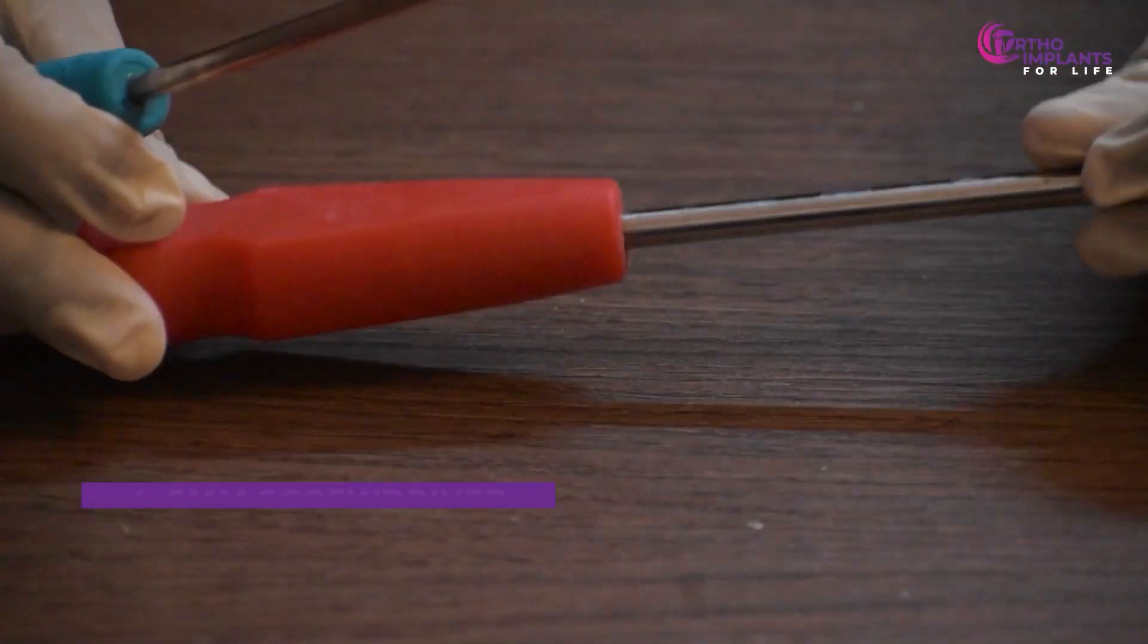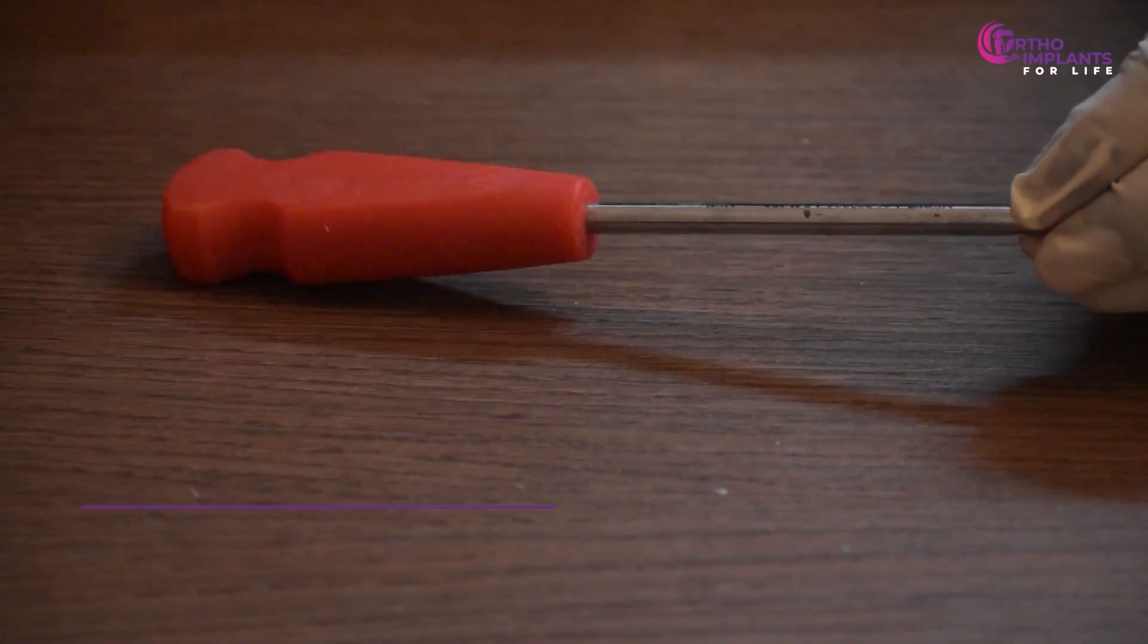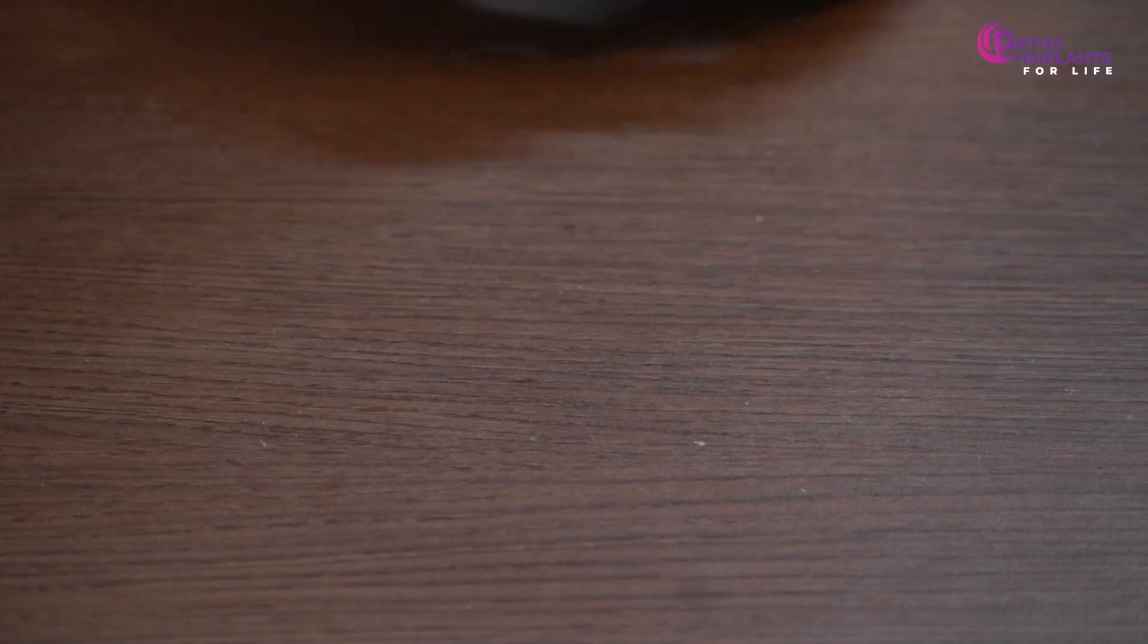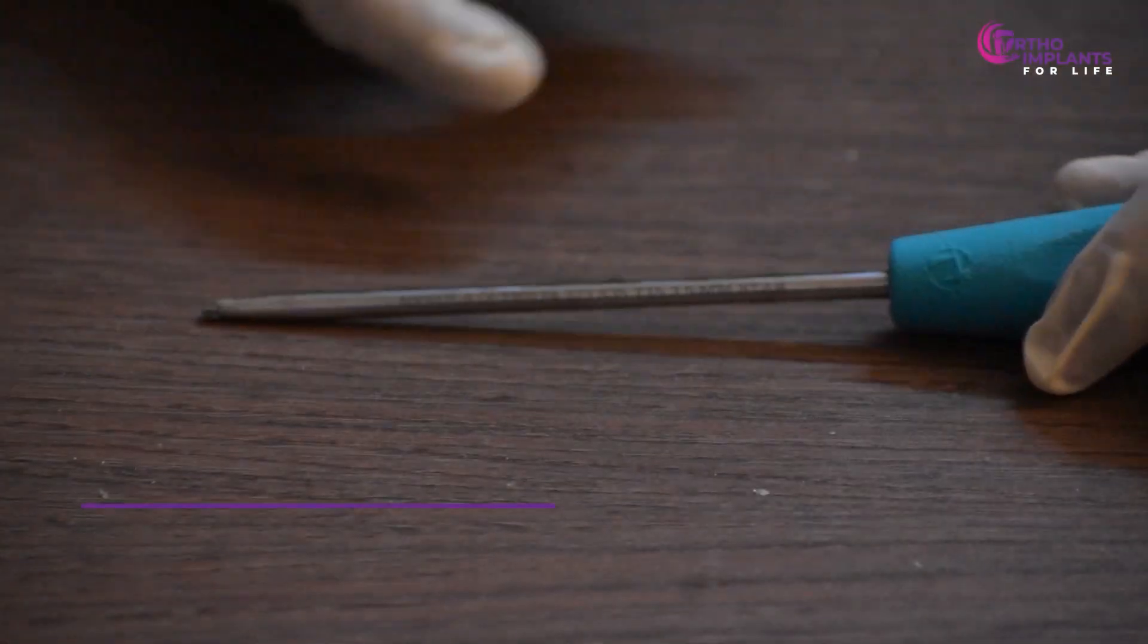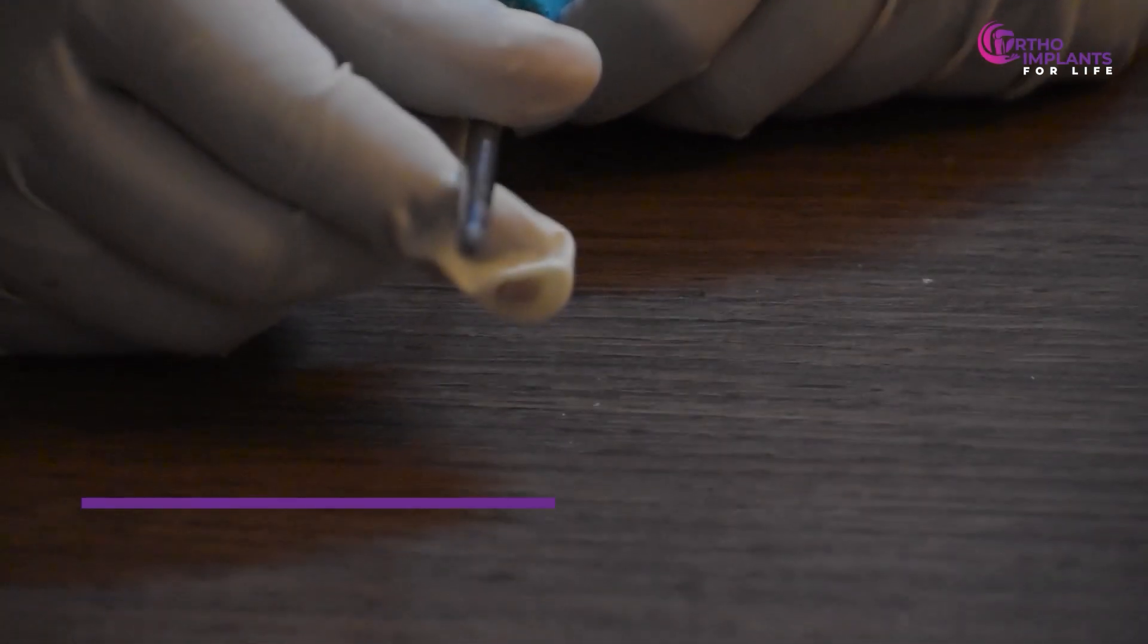And the 4.5 mm screwdriver, which is for the 4.5 mm cortical screw. This is the 3.5 mm star-headed screwdriver, which is used for the 5 mm locking screw.